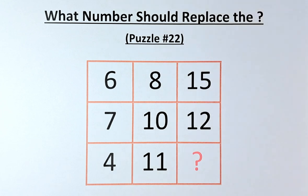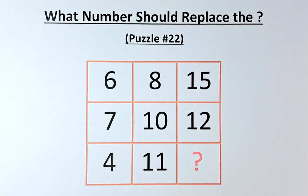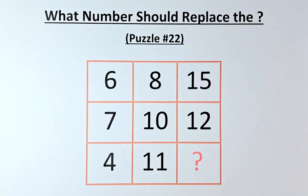Welcome back to the solution of puzzle number 22. What number should replace the question mark? In the first row, we have 6, 8, 15. Second row, 7, 10, 12. And in the final row, we have 4, 11, and the question mark.